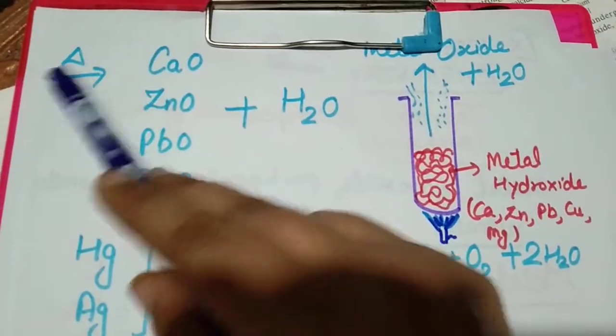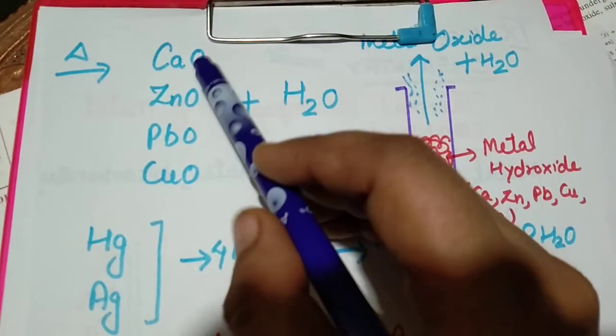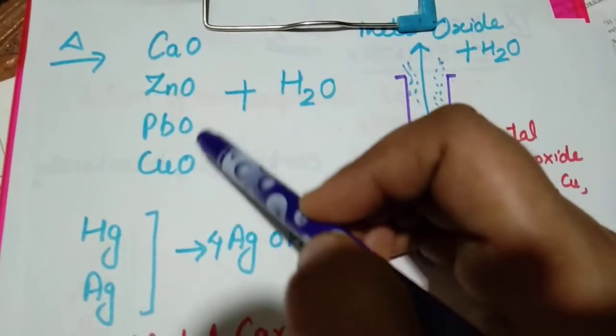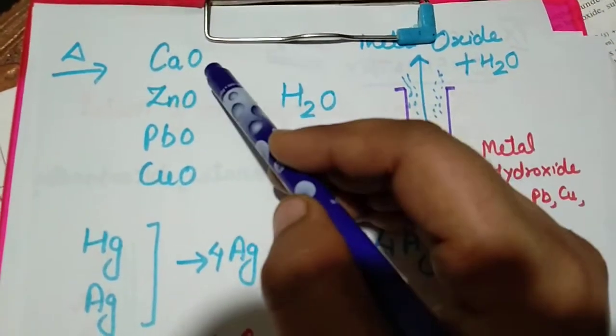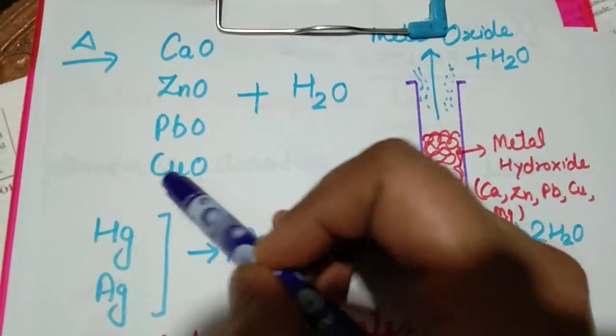When their hydroxides are heated, this delta sign means heating. They produce corresponding metal oxide - calcium oxide, magnesium oxide, zinc oxide, lead oxide, copper oxide.